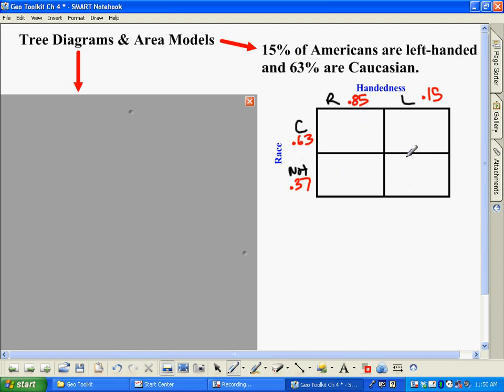Each different part of this, each little rectangle, all you do is you multiply the probabilities for each. So for instance, this is the spot for people that are right-handed and Caucasian. So right-handers is 0.85, Caucasian is 0.63, and if you multiply these two together, you get 0.5355. So what that tells you is of all Americans, about 54% of people are right-handed and Caucasian.